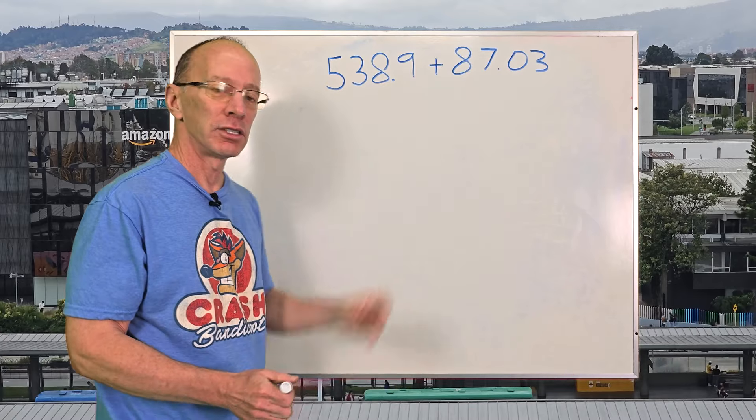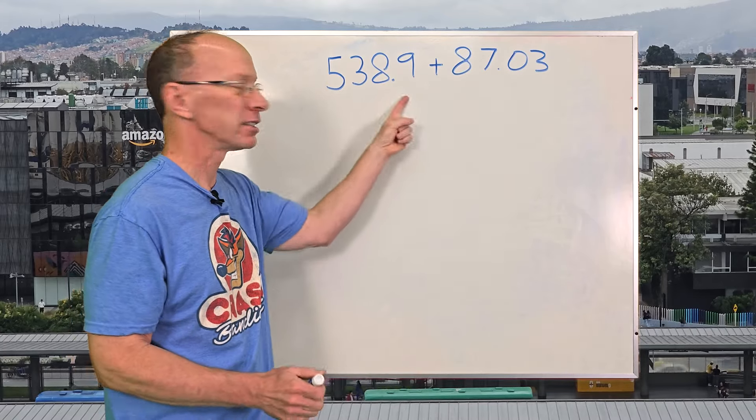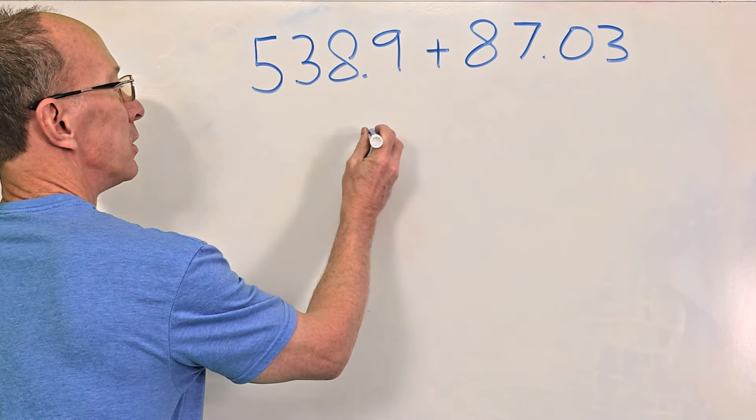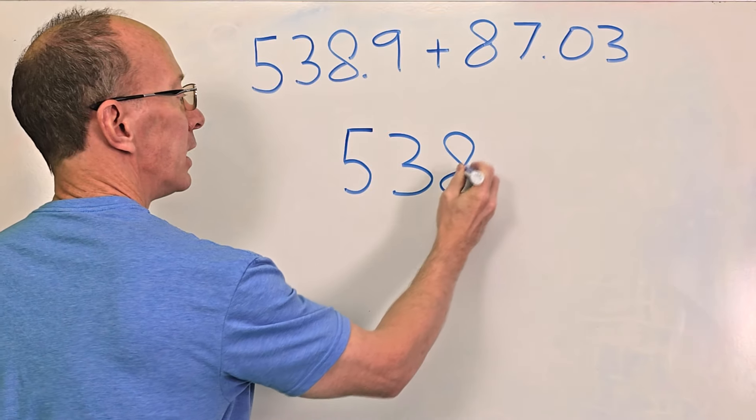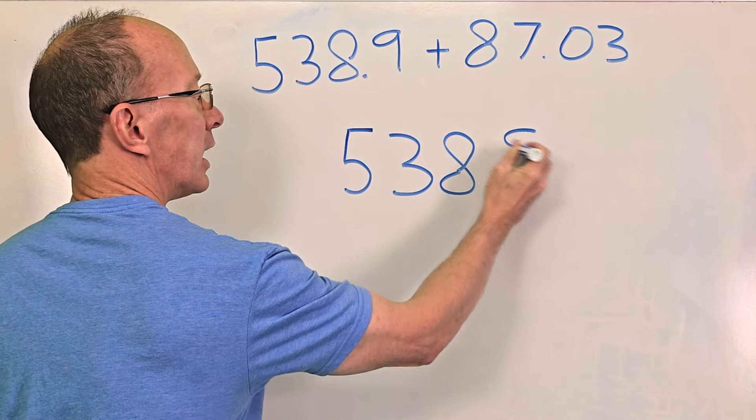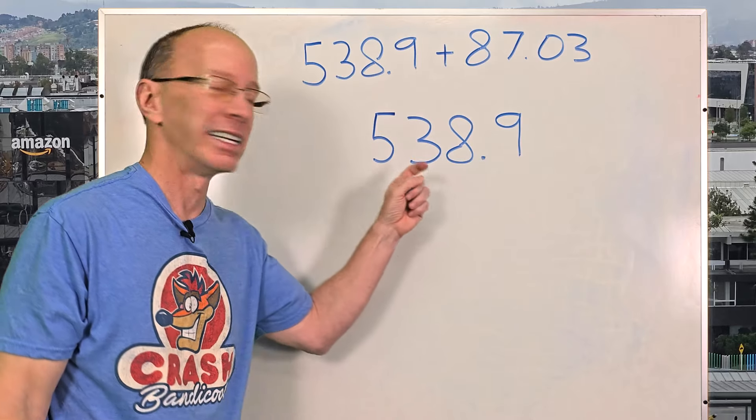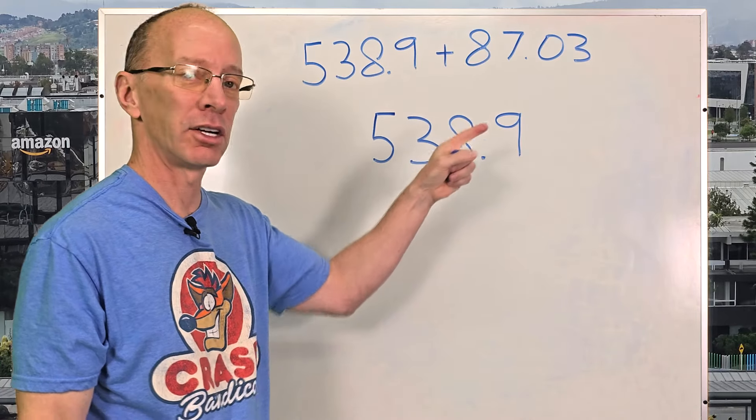How do you rewrite it? So first of all, just write this number here, the first number. I'm going to put 538.9. All right, and now I'm going to write the next number, 87.03.